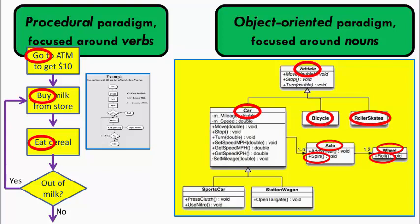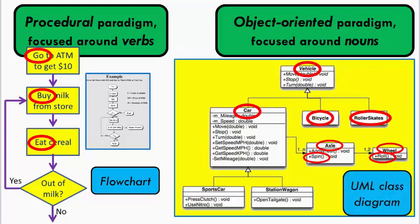Today's software engineer designs programs using both the object-oriented and the procedural paradigms. There is a place for each. The key difference is that when she is doing procedural design, she focuses on verbs and thinks in terms of flowcharts. When she is doing object-oriented design, she focuses on nouns and uses UML class diagrams, like the one shown here, to develop her design.